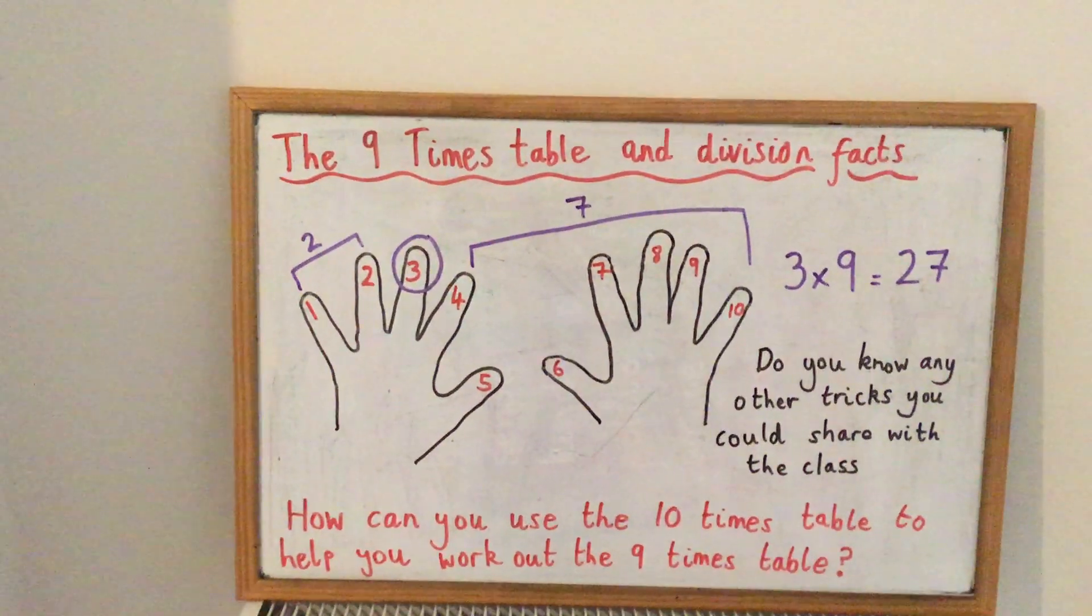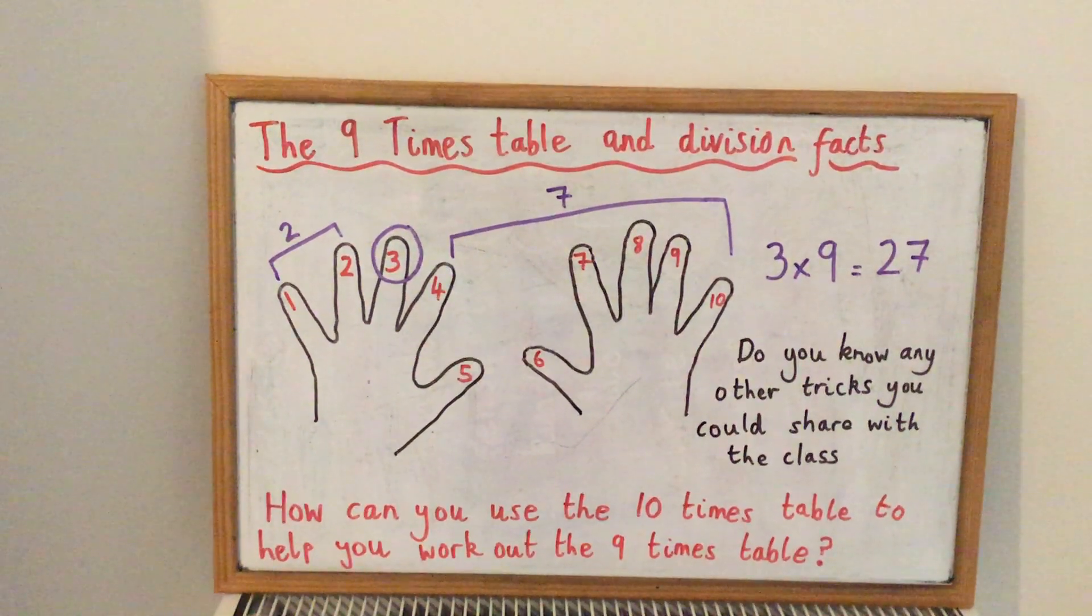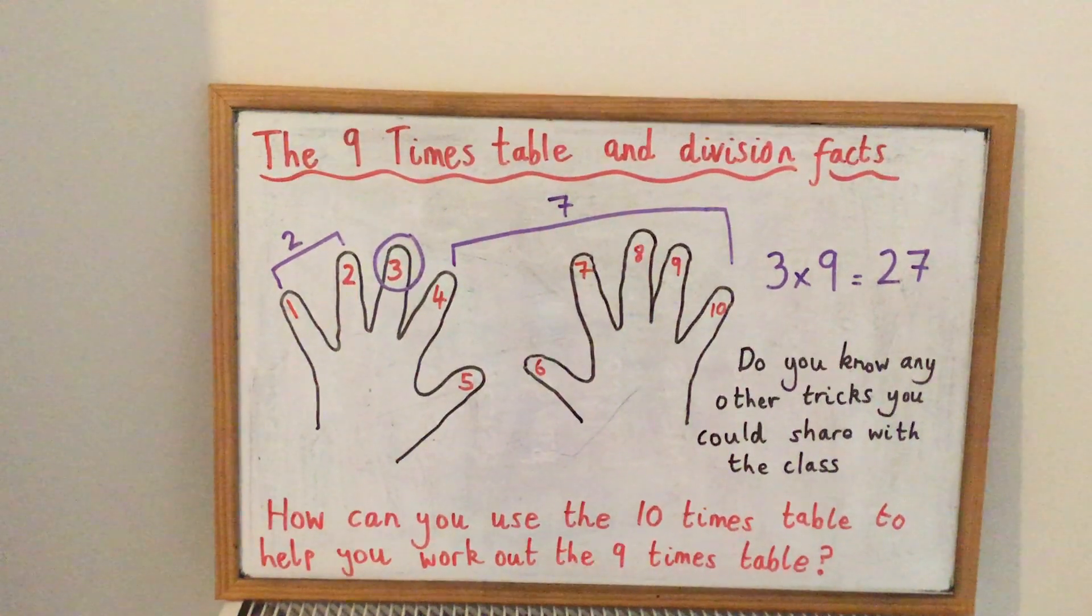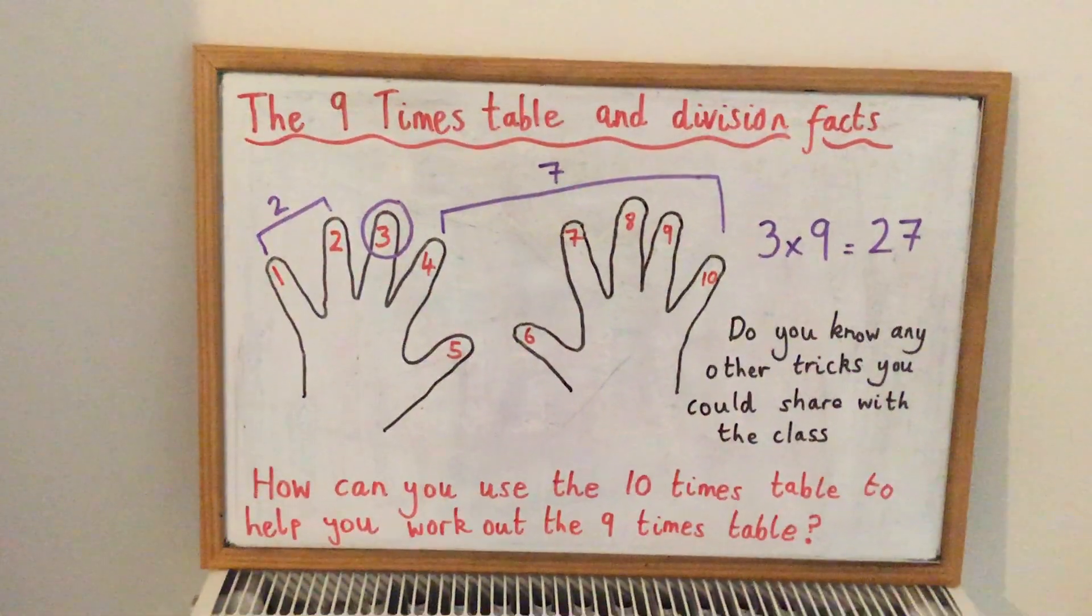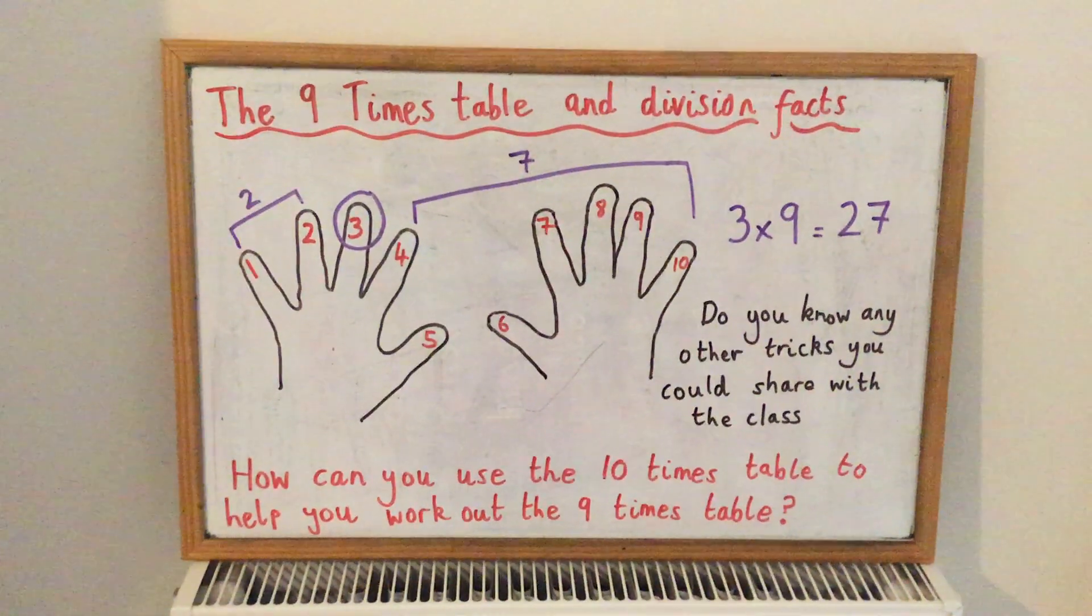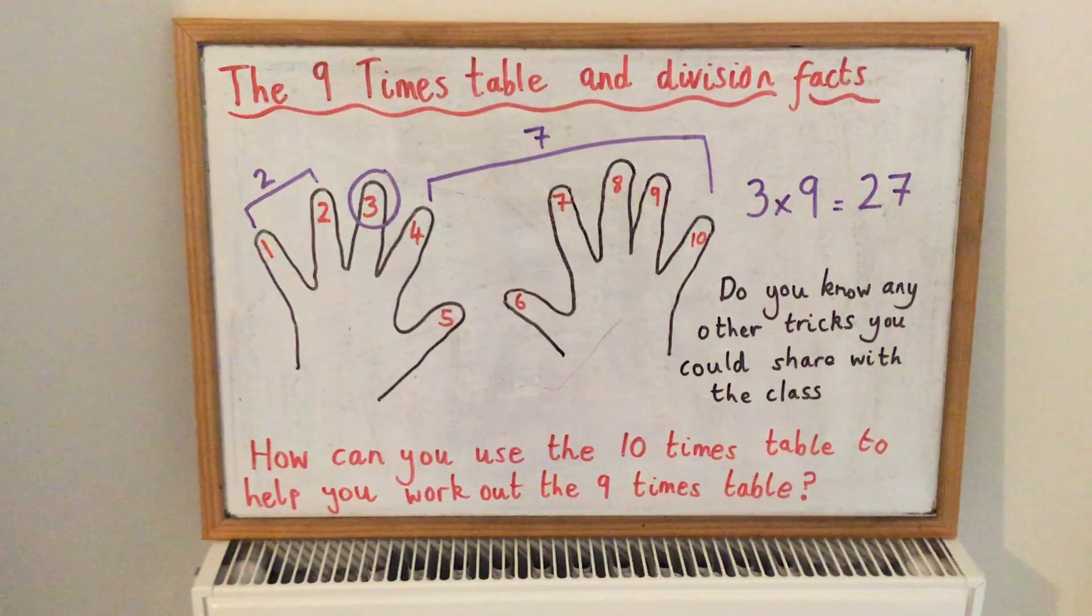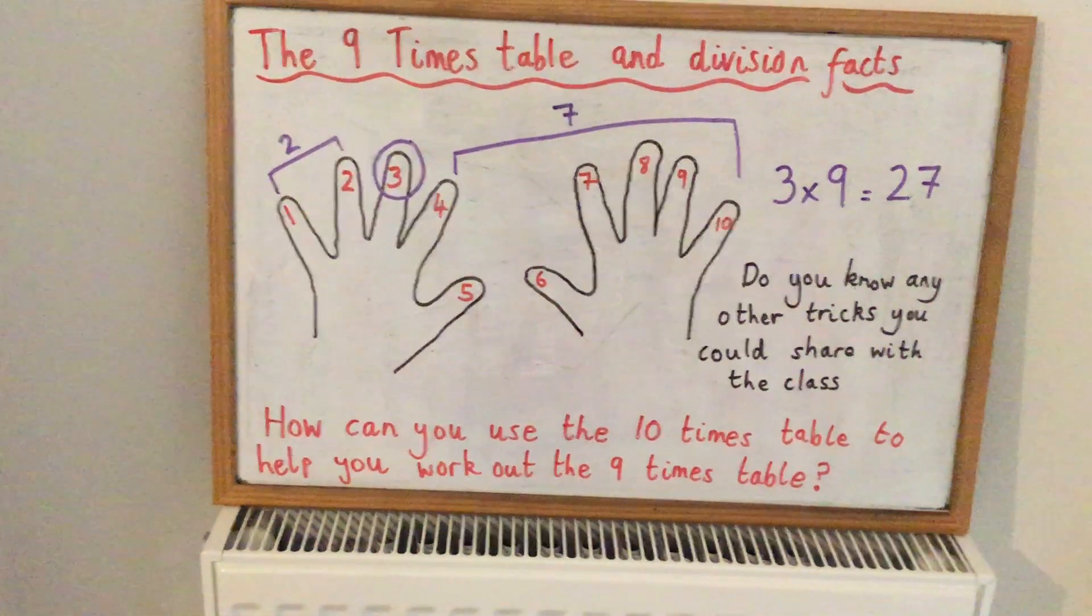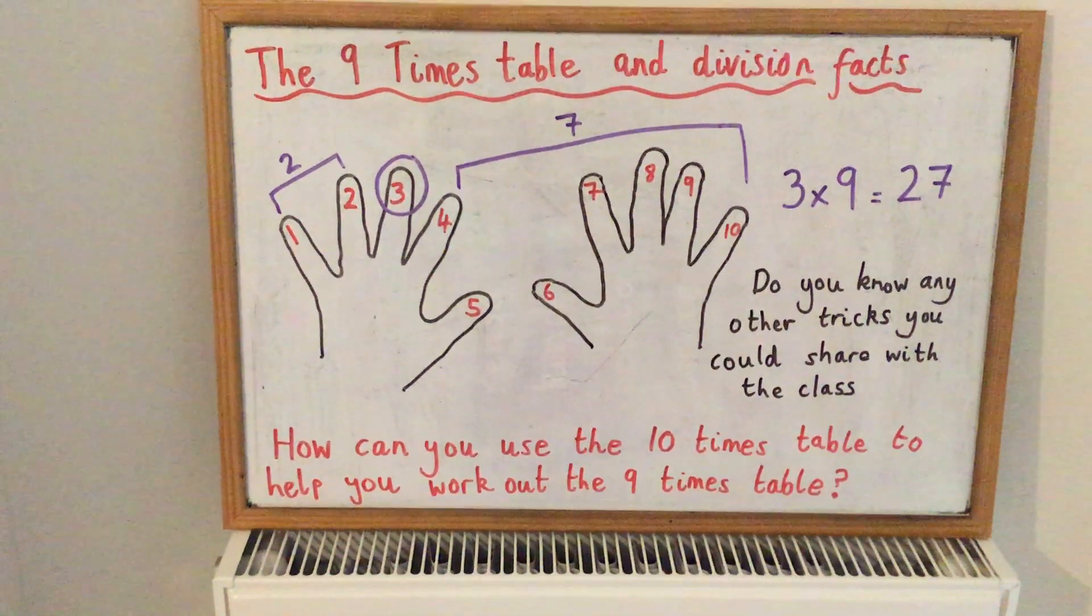Let's say for example, I wanted to do six times nine. So this time I would find my sixth finger. That would be my thumb on my right hand and I would put that thumb down. Then on the left of my right hand thumb, I should have five fingers still raised. And on the right of my right hand thumb, I should have four fingers still raised. So six times nine would give me 54.